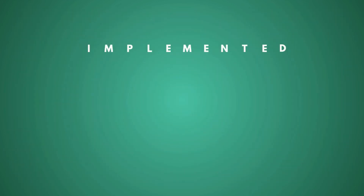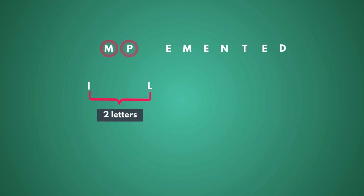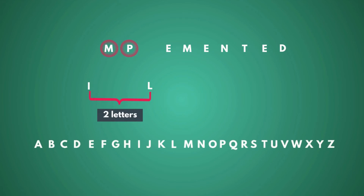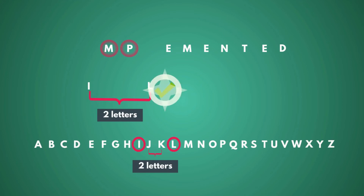There is a valid pair: I-L. There are two letters between I and L in the given word, and in the English alphabet also there are two letters between I and L. So this is a valid pair.